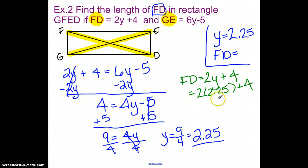Plus 4 would be 8.5. So that means that FD would have to equal 8.5. Put that in here.